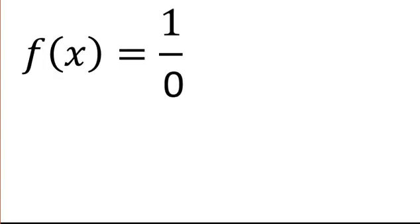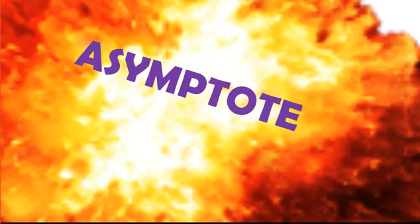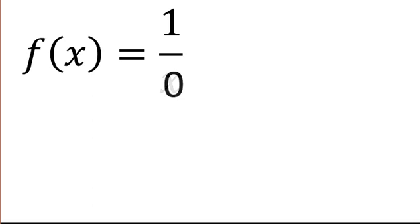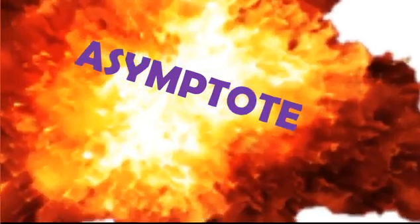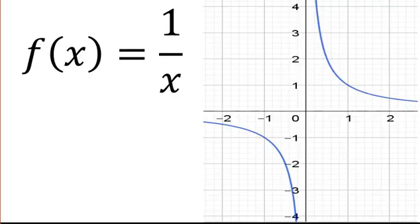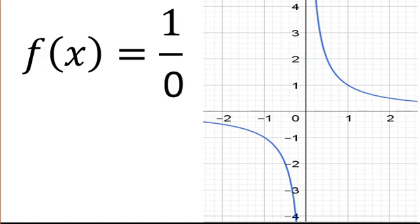Don't divide by zero, it's an asymptote. Don't divide by zero, it's an asymptote. Don't divide by zero, it makes an asymptote.